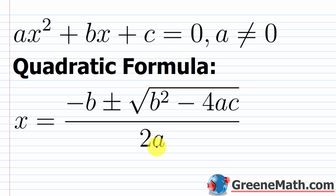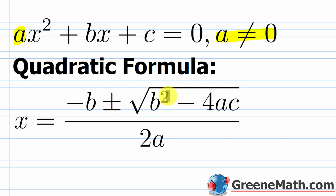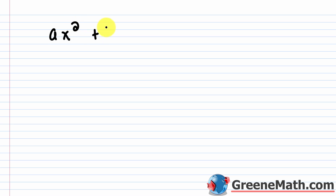In this video we're going to derive the quadratic formula. This is pretty easy overall, something you would do in an Algebra 1 course. We start with ax² + bx + c = 0, where a, the coefficient for x², cannot be equal to zero. The quadratic formula — what we're going to derive — states that x equals negative b plus or minus the square root of b² minus 4ac, all over 2a.